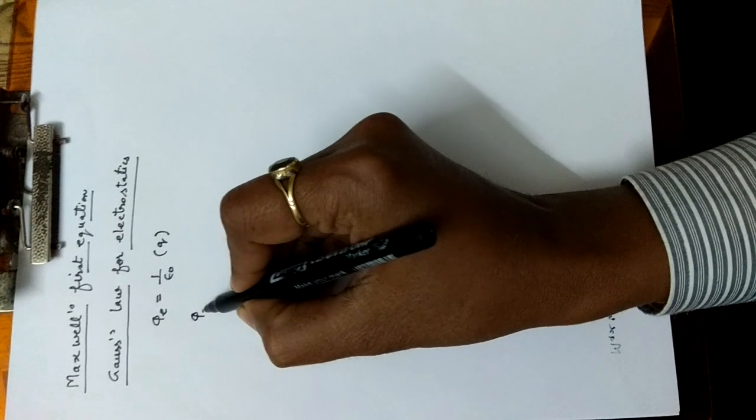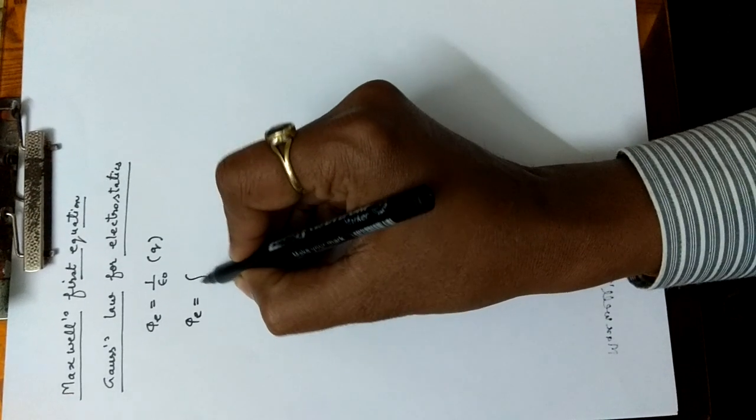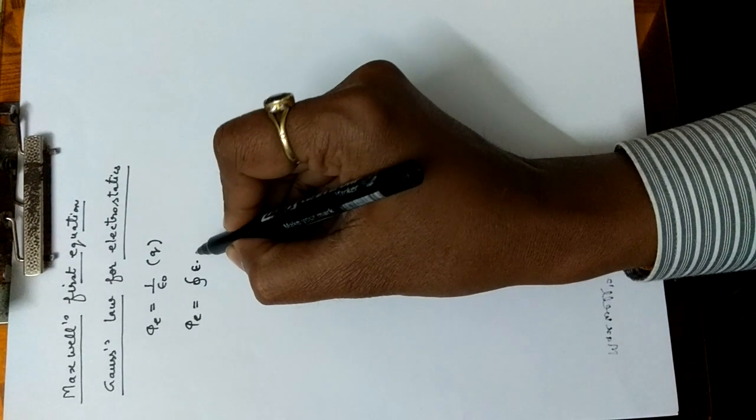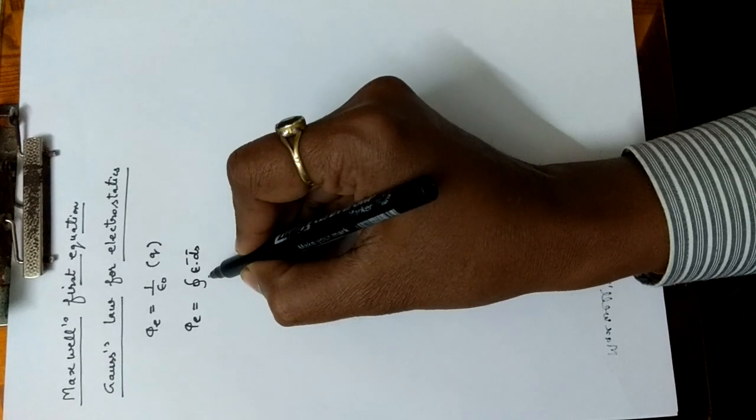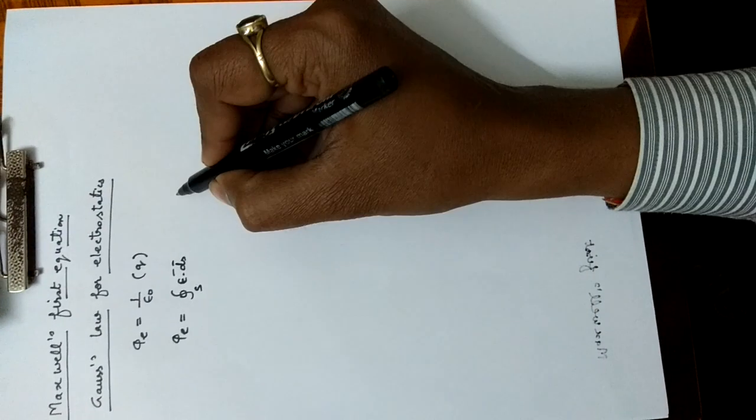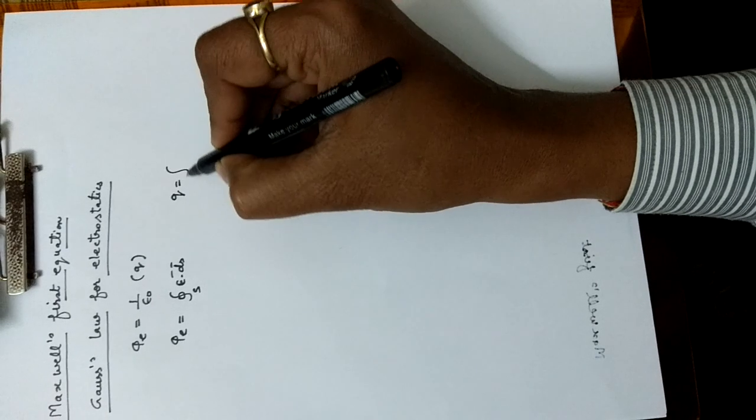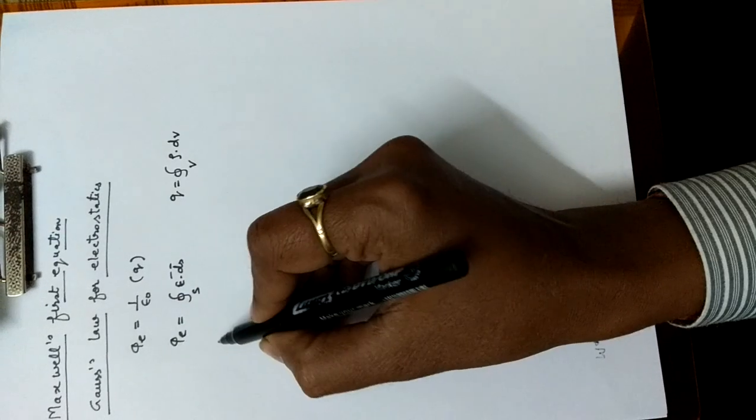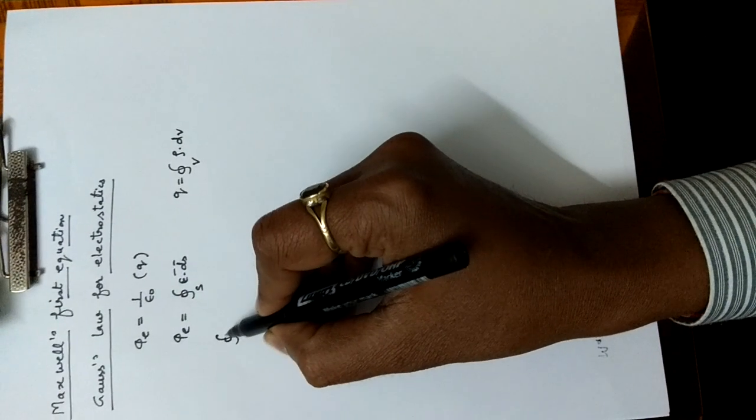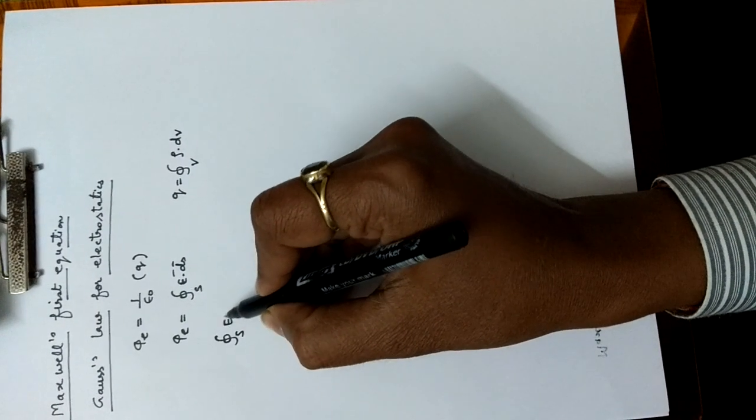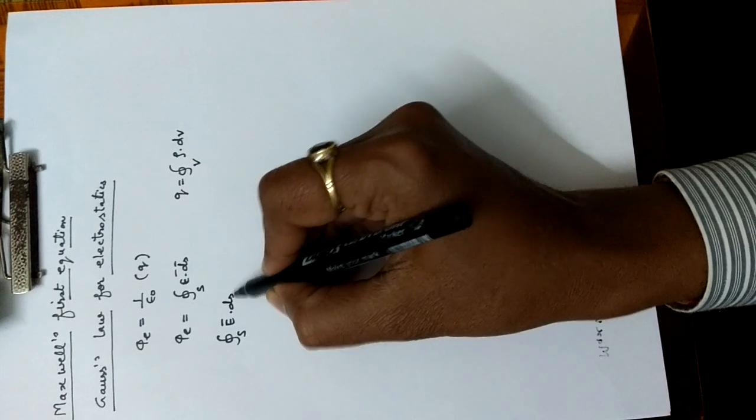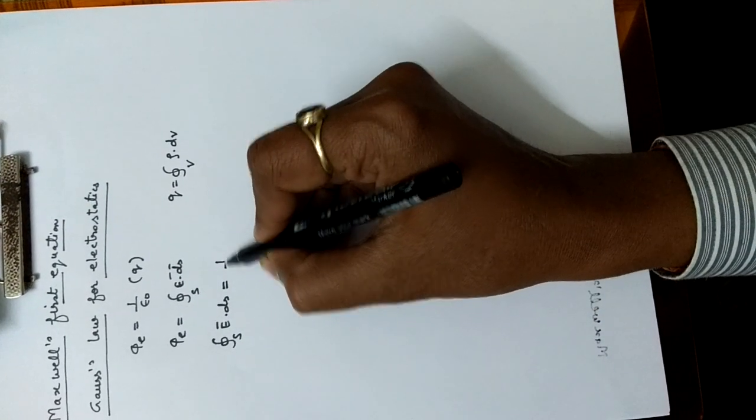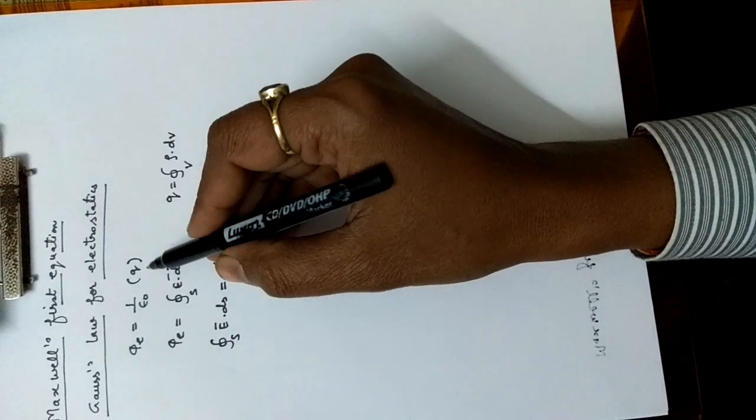This electric flux we can write as surface integration of electric field, and charge we can write as volume integration of charge density. Phi E we can write as surface integration of electric field and it should be equal to 1 upon epsilon naught times the charge.